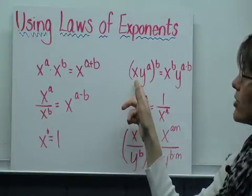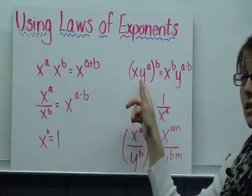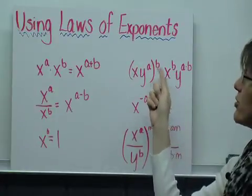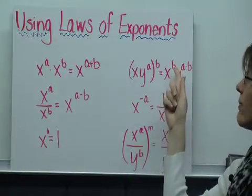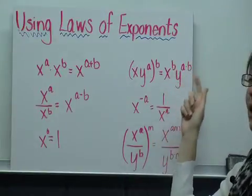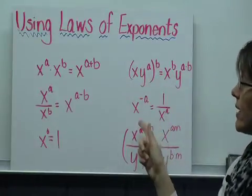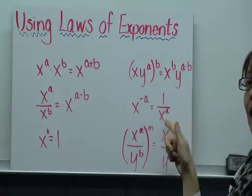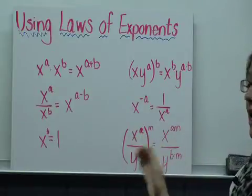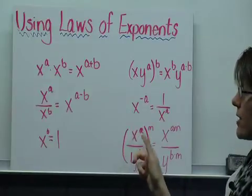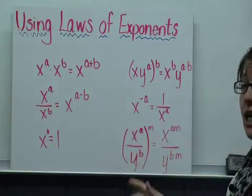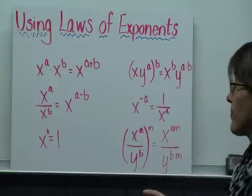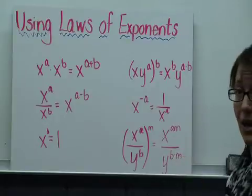If we have what's called the power-to-a-power rule, so I have two things being multiplied inside parentheses, and that entire expression is raised to the b power, I'm going to simplify this as x to the b power and y to the a times b — so multiplying those exponents. If I have x to the negative a, that means I have 1 divided by x to the a power. And finally, I have the power of a quotient rule: x to the a divided by y to the b, all raised to the m power, gives x to the a times m divided by y to the b times m.